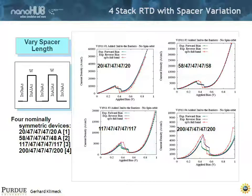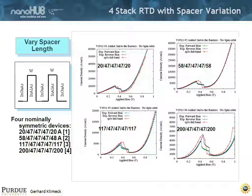At the end, we didn't just connect to one experiment and say okay, we can declare success. But with experimentalists, we designed devices that were in a controlled environment, and at the end, we were overlapping experiment and theory over devices that were quite different. Here are four devices grown on top of each other on a wafer, and they're all symmetric in this case.